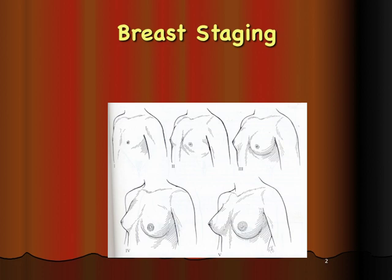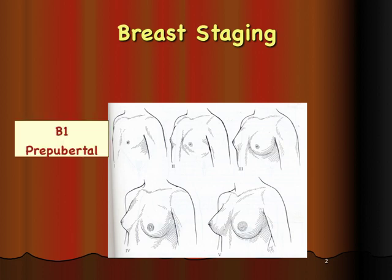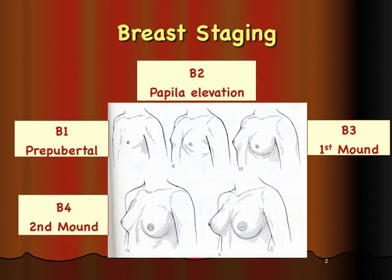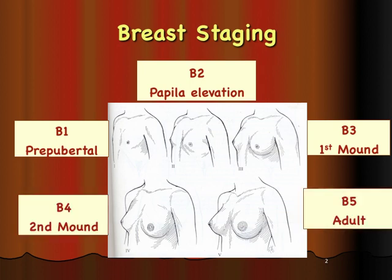We'll begin with breast staging for girls, which is the most important aspect for evaluation. We are all aware of the five stages starting from pre-pubertal breast development to papilla elevation, to primary mound, to secondary mound, and finally the adult form. It might look complicated, but there are just two stages which really need to be looked into when breast development is being assessed in a girl.